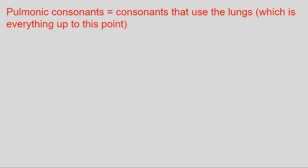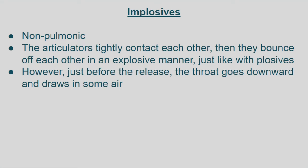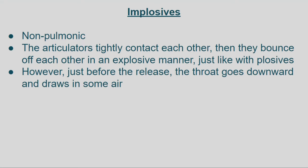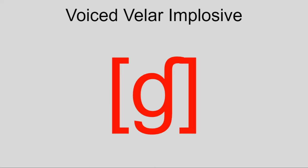That's the end of the pulmonic consonants — those that use the lungs. Now for non-pulmonic consonants: three groups of rather interesting consonants that don't use the lungs. First up are implosives, which are basically plosives, but your throat goes down and draws some air inwards just before the release, hence why they're called implosive. Four of them are ɓ, ɗ, ʄ, and ɠ.